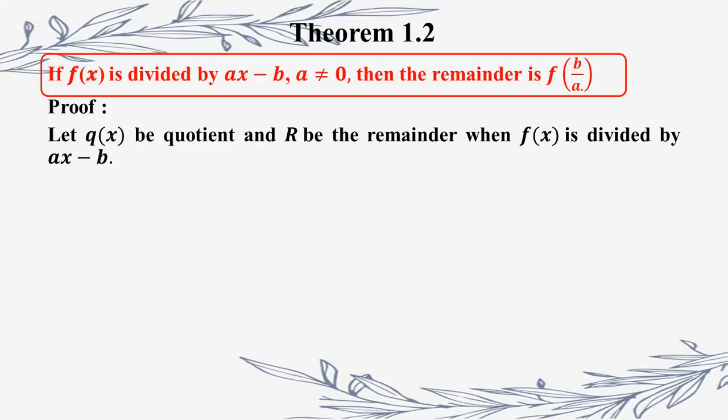f of a divided by f of a is a polynomial. It is minus b.